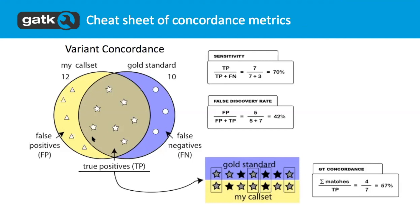As far as variant concordance metrics you can take: sensitivity is the number of true positives over true positives plus false negatives, the false discovery rate, and genotype concordance. These are all metrics associated with concordance that you'd want to evaluate. It's a cheat sheet, but the math is fairly straightforward.